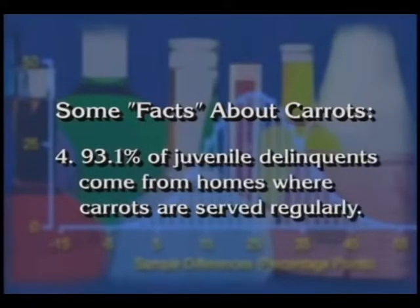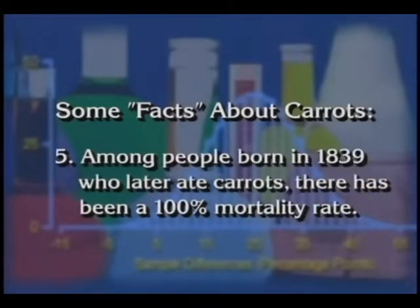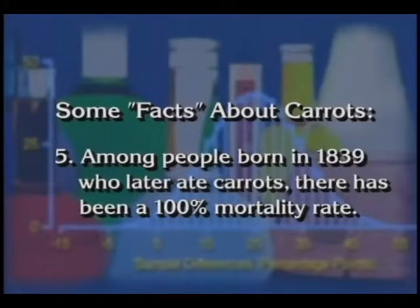93.1% of juvenile delinquents come from homes where carrots are served regularly. And finally, among people born in 1839 who later ate carrots, there has been a 100% mortality rate.